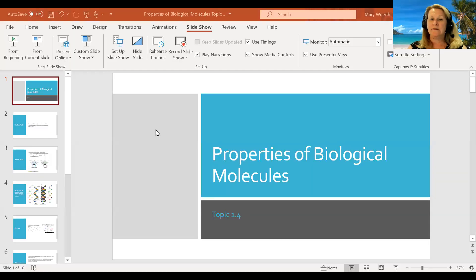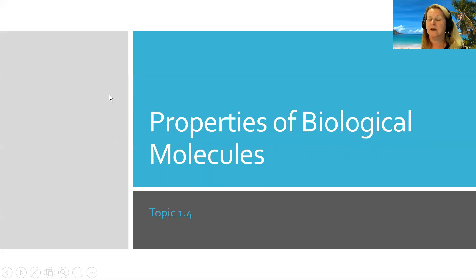Hi, everyone. Today we're going to talk about the properties of biological macromolecules. There are four basic types of biological macromolecules that you need to know about for AP biology: nucleic acids, proteins, carbohydrates, and lipids.